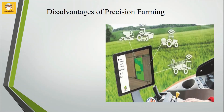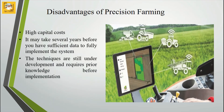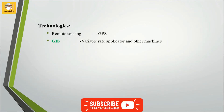Some of the drawbacks include high capital costs, and it may take several years before you have sufficient data to fully implement the system on a farm. The techniques are still under development and require prior knowledge before implementation. It is quite a difficult task to collect and analyze the data of a particular farm or field to analyze its variability and apply the technology.